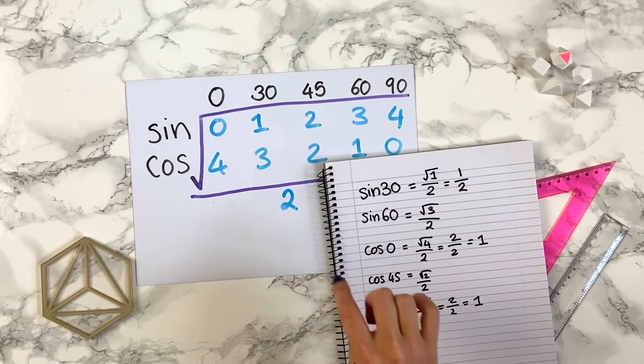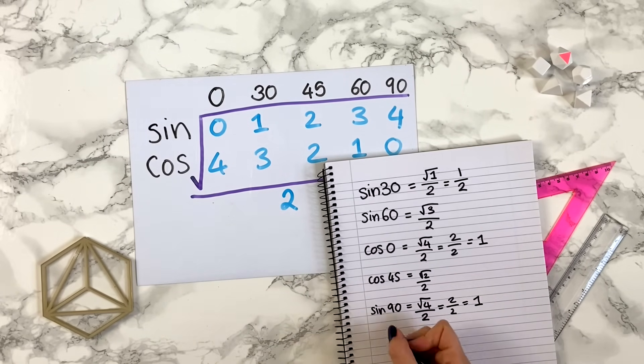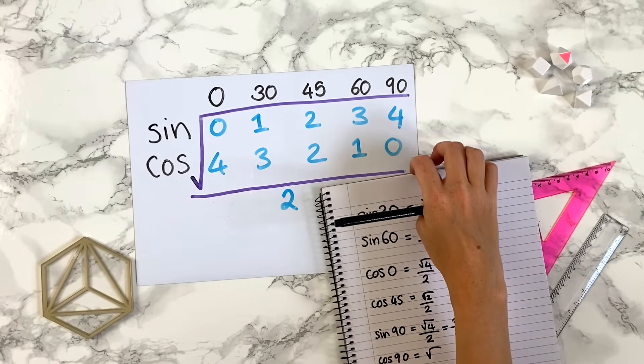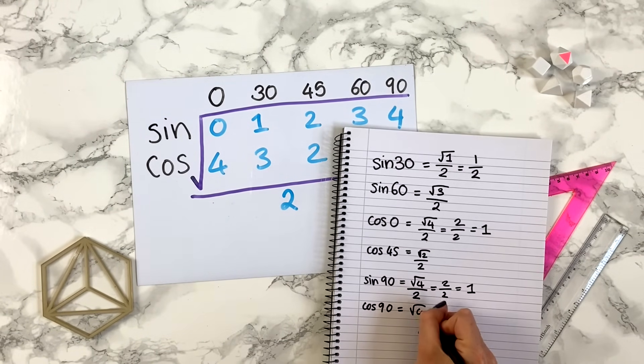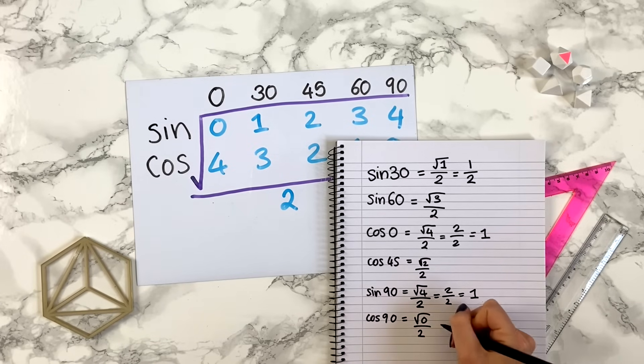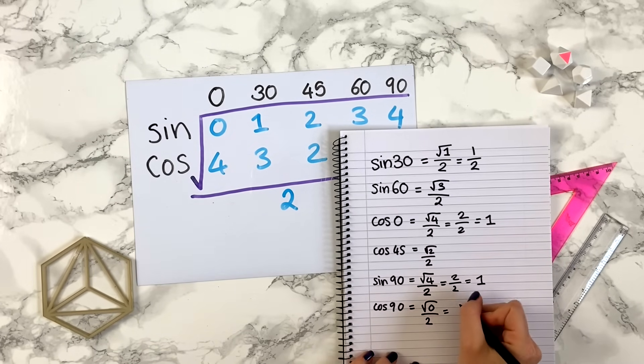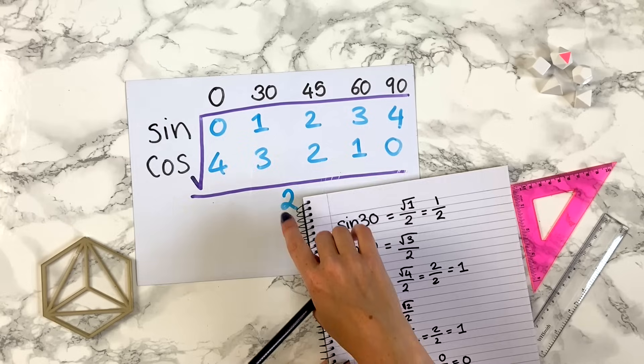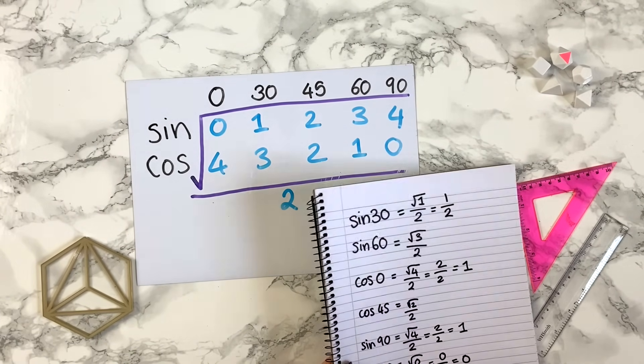Actually, let me show you one more. Let's do cos of 90. Square root, cos of 90 corresponds to a 0 here, so you have square root of 0 all divided by 2, and square root of 0 is just 0. So we have 0 divided by 2, and this is just 0. So sine of 0 and cos of 90 both just give you 0.